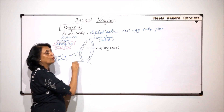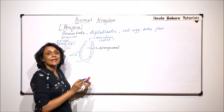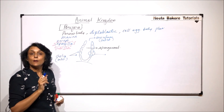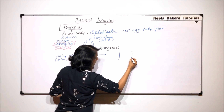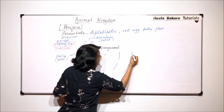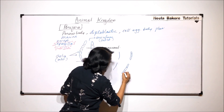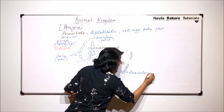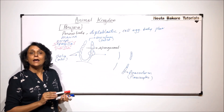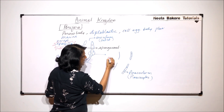Being diploblastic means they develop from two germ layers. Let us enlarge a piece of the body wall to see where the various layers and cells are present. The outer layer is made up of flat cells known as pinacocytes, and the complete layer is known as pinacoderm. The inner layer lining the spongocoel is made up of choanocytes.